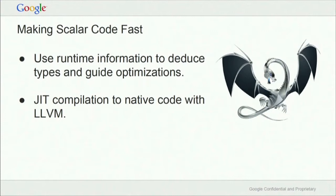Once we've got all this happening, we want to take this all the way down to native code — something JavaScript, Lua, and Java engines all do, and something we want to do for R as well. At this point we have a proof-of-concept just-in-time compiler, but being proof of concept, it doesn't actually make anything faster yet.